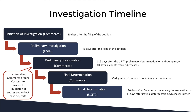Commerce then moves into their final determination on whether the foreign company is dumping or receiving financial assistance, followed by the final determination by the U.S. ITC regarding injury to the domestic market. If the final determination is affirmative in both cases — both the Department of Commerce and the U.S. ITC — then the final determination order is issued and anti-dumping duties start being collected on all imported goods that fall under the scope.